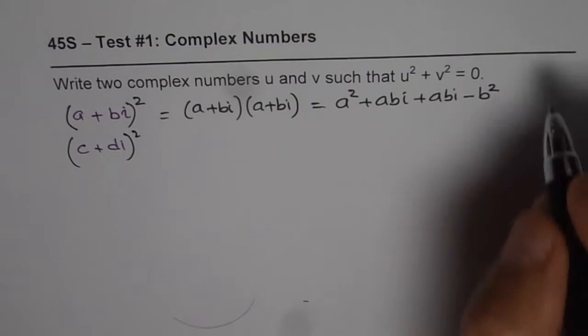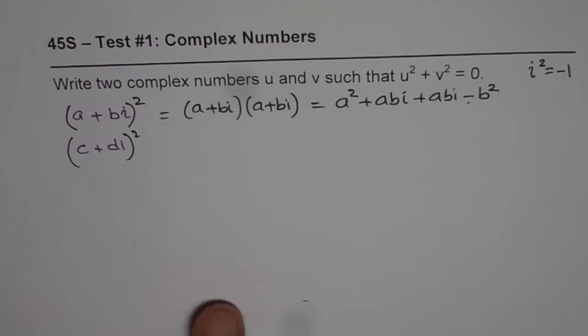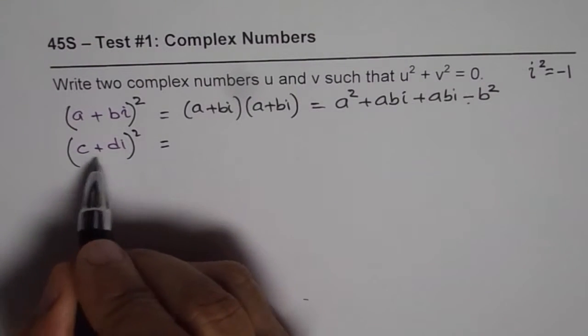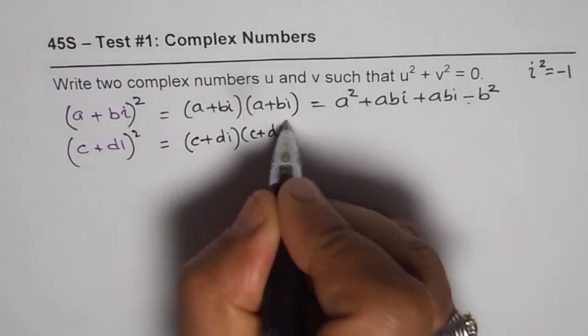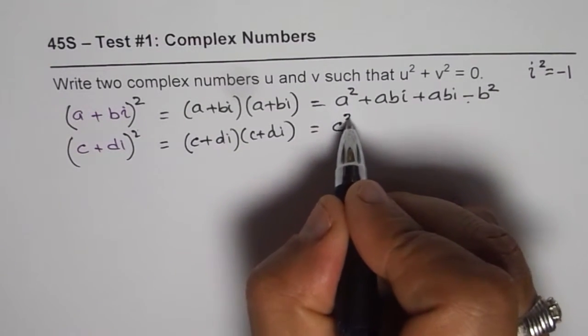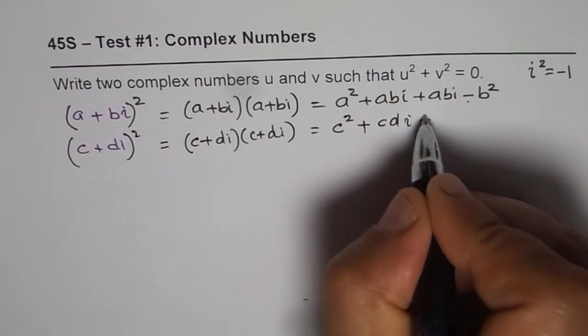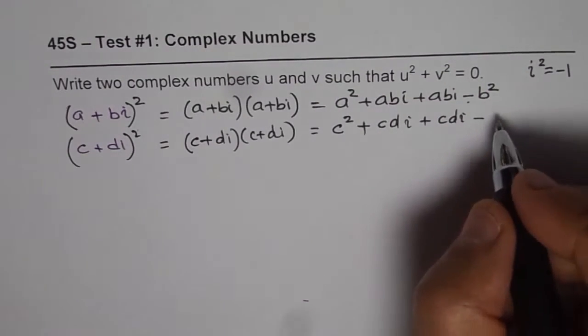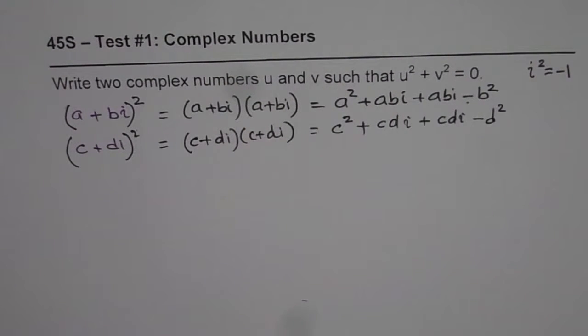So, at this stage, I think we can do that. The second one is (c + di)². So the same thing, (c + di)(c + di). And when you square it, you get the same thing, which is c² + cdi + cdi - d². So, you get the same thing.